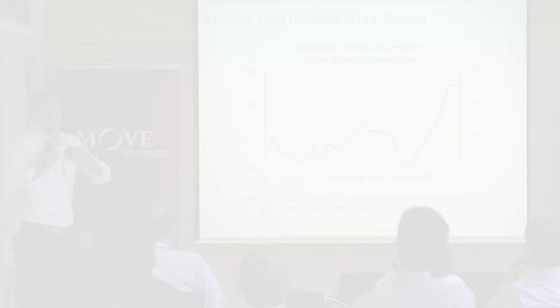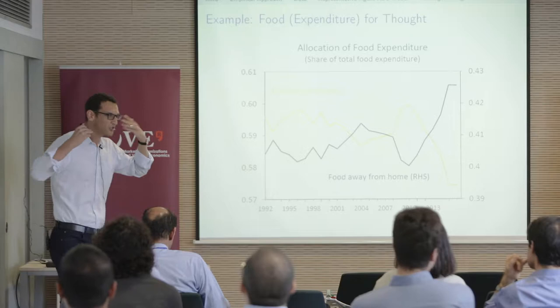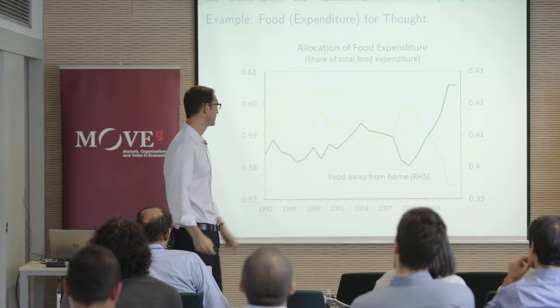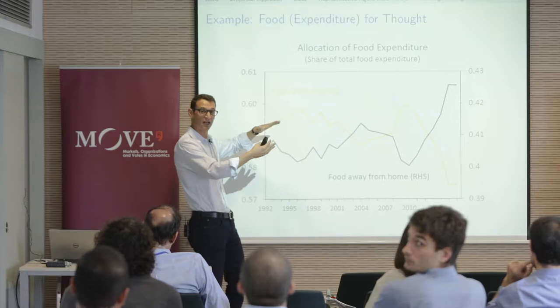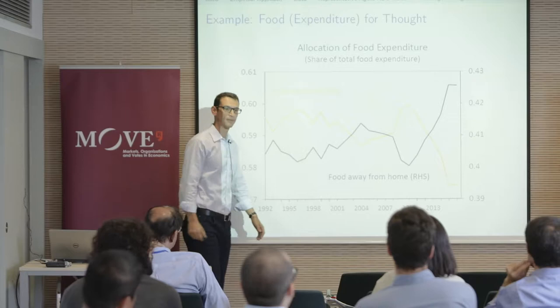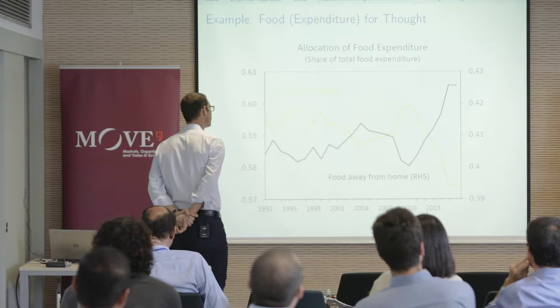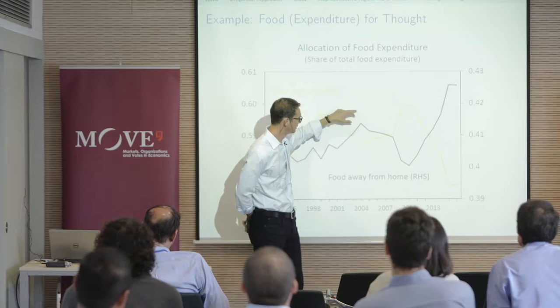Usually when I think about changes in shares and allocation of consumption, my natural inclination was to think about categories that are necessities versus luxuries — think about estimating Engel curves. The classic example we always teach is food: food at home is a necessity, food away from home is a luxury. That's kind of what we think we see substitution around. In fact, when you look at the data, this is where you see the biggest shift in shares during the recession.